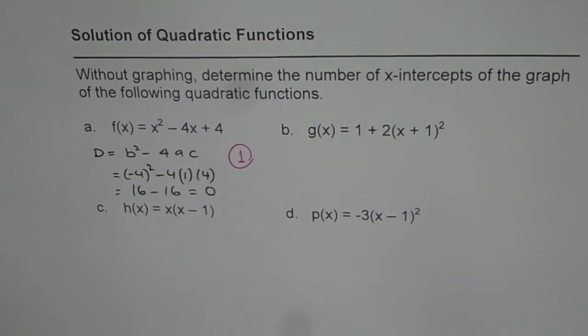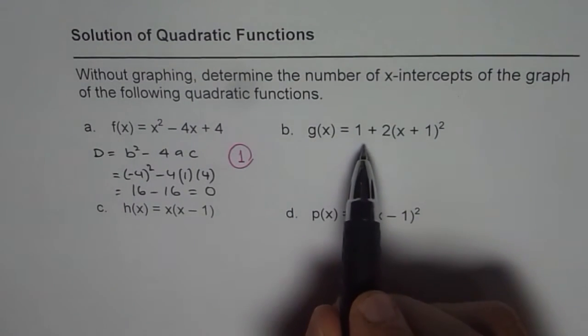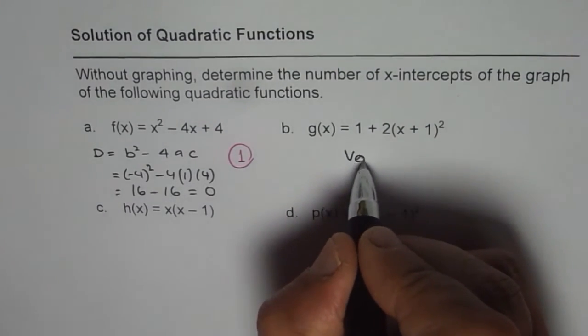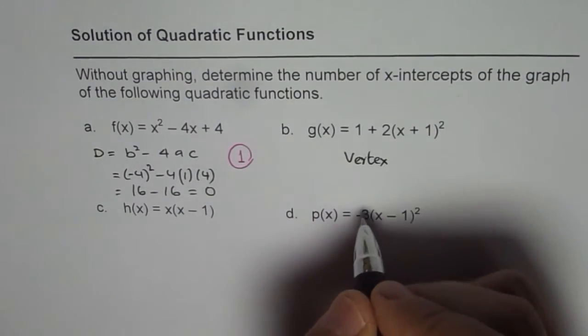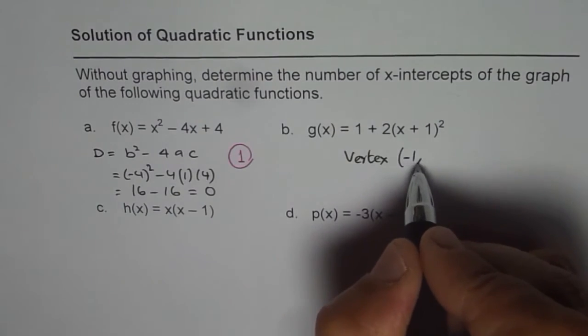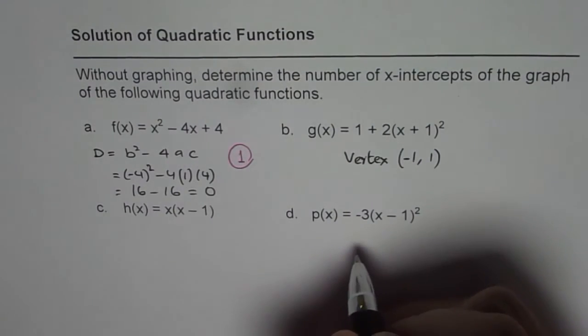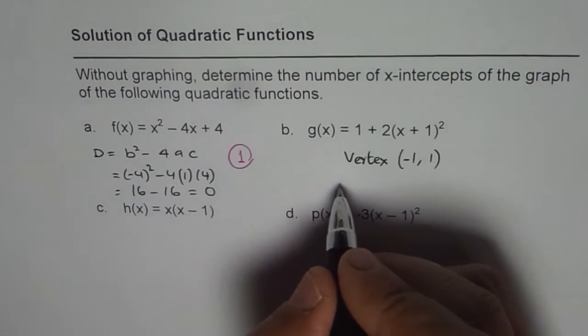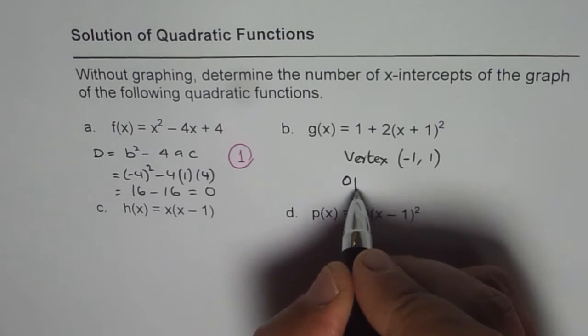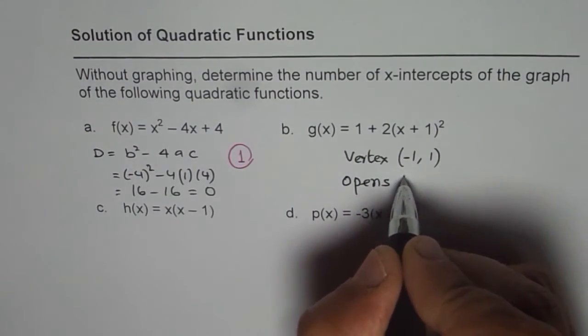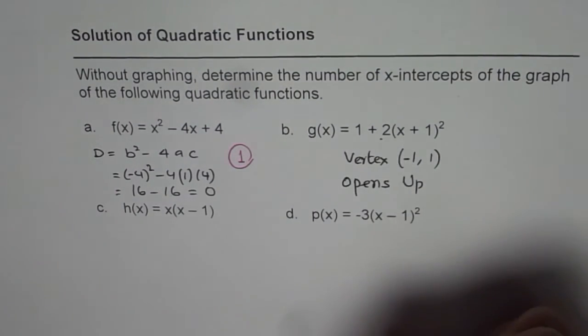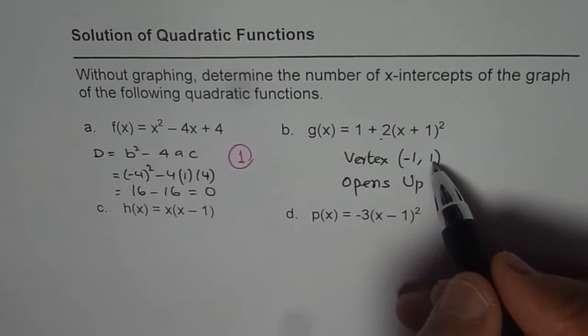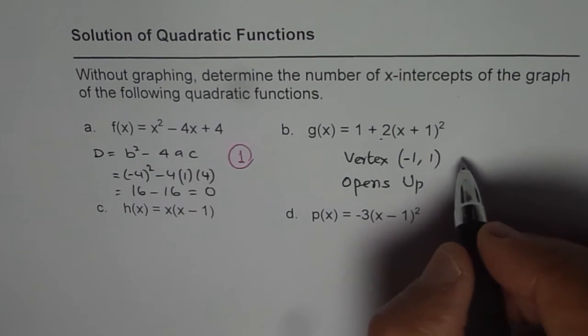The next one is in vertex form. What is the vertex? The vertex of this function is at (minus 1, 1). And the direction of opening is what? It opens in which direction? Upwards, since the coefficient is positive. The y-value is already positive and it opens upwards,